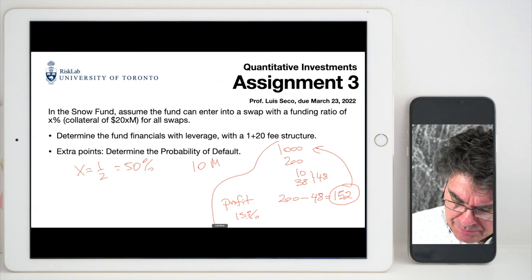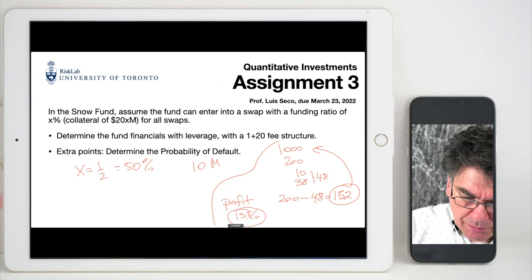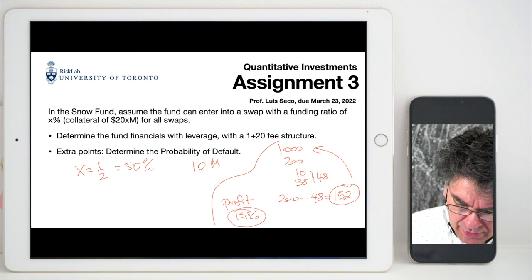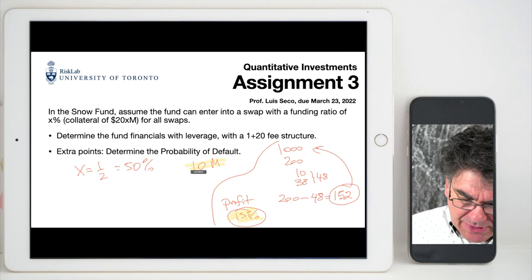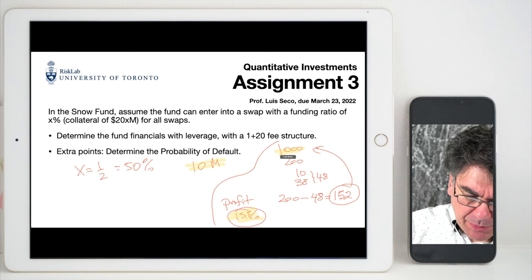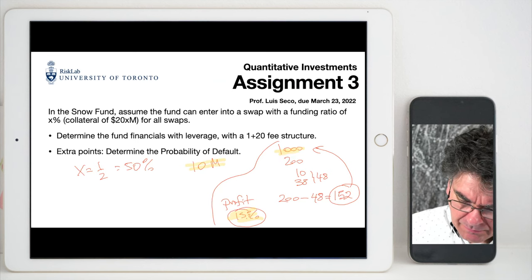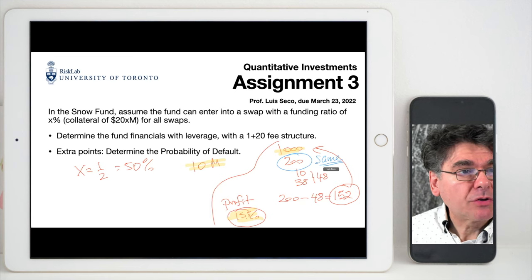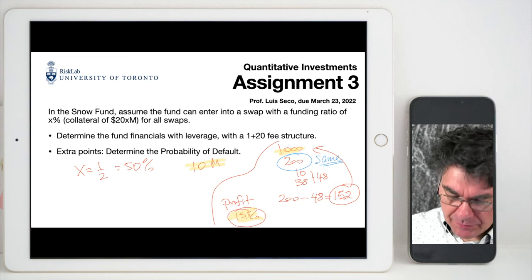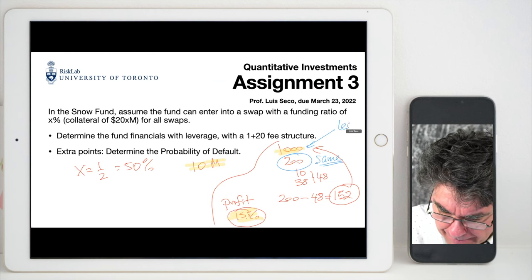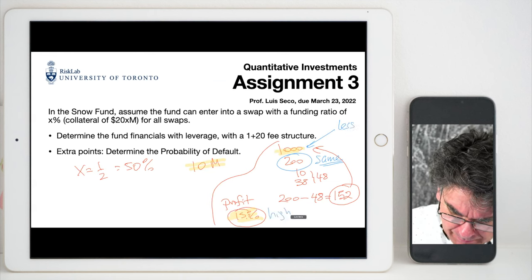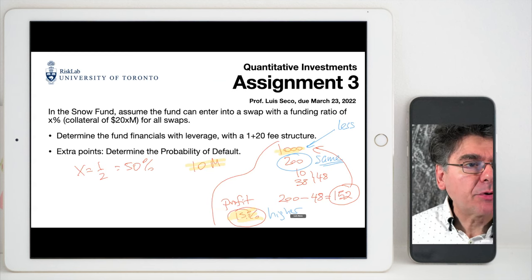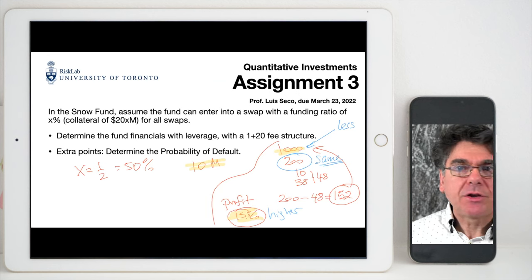The profit goes much higher when leverage is allowed — when I can invest less money. My profit is the same because I'm still entering 100 swap contracts, but I'm investing less money, so the return percentage is higher. I need you to model these financials as a function of x.